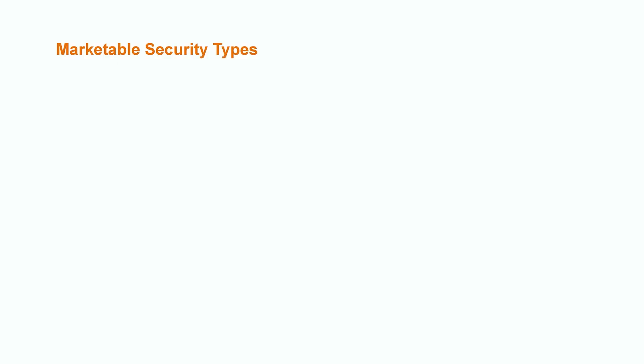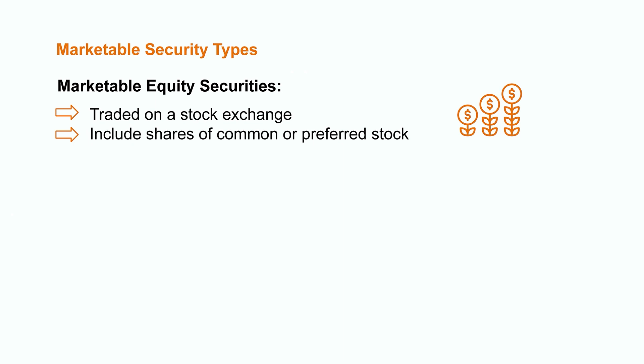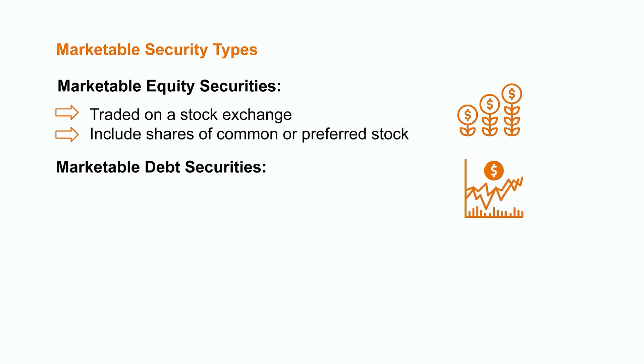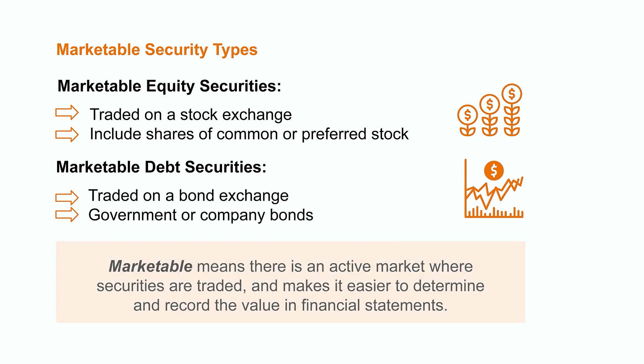Marketable securities can come in many shapes and sizes and are usually classified into two groups: marketable equity securities and marketable debt securities. Marketable equity securities are traded on a stock exchange and include shares of another company's common or preferred stock. On the other hand, marketable debt securities are traded on a bond exchange and typically come in the form of government or company bonds. The term 'marketable' means that there is an active market where the securities are currently traded, which makes it easier to determine and record the value in the financial statements.